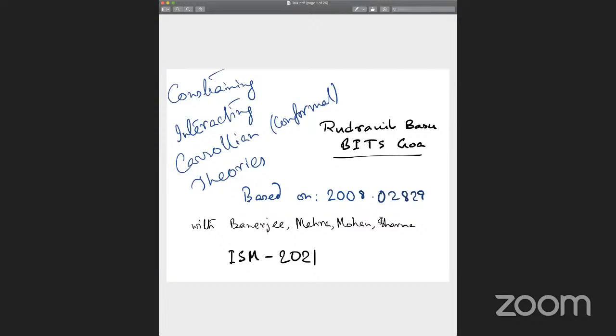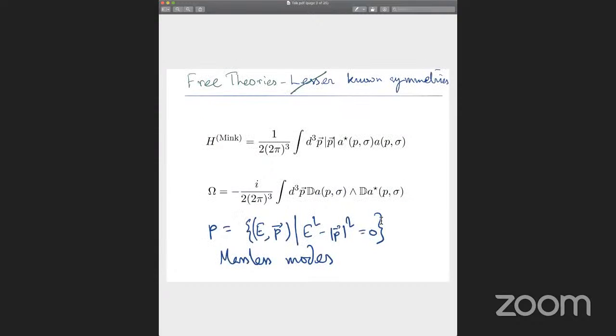Basically, I'll be talking about Carolian conformal field theories and classifying or rather constraining interactions when we have conformal symmetry, Carolian conformal symmetries. You might have heard Oritra talking about Carolian physics a couple of days back when he was talking about tensionless strings. The present work that I'm talking about was last year with my collaborators Injel, two Adityas and Akhilam.